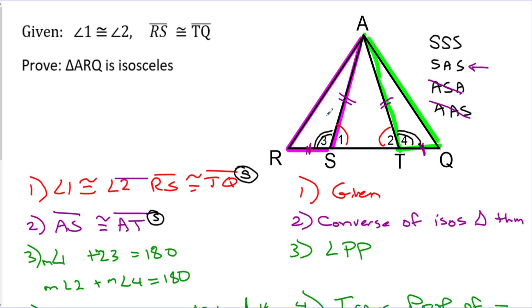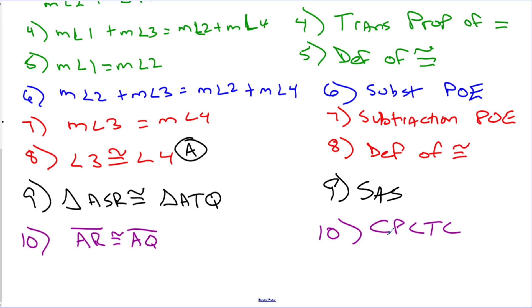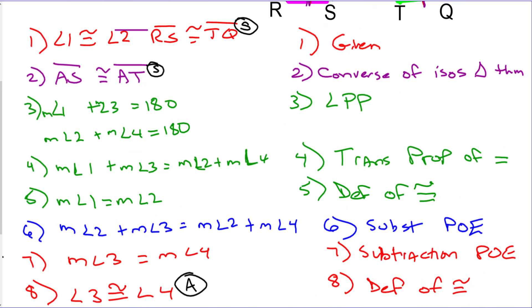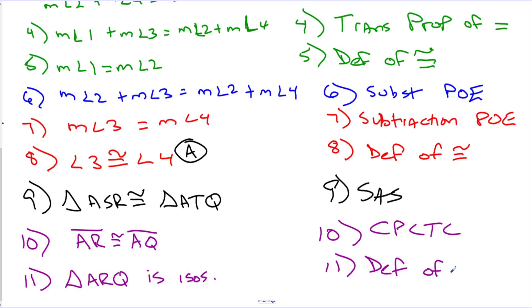Now we know the triangles are congruent, and we did all of that work so I could say AR and AQ are parts of congruent triangles, which means they are also congruent. Step 10: AR is congruent to AQ, by CPCTC - Corresponding Parts of Congruent Triangles Are Congruent. And then because I just showed AR is congruent to AQ, the last step: triangle ARQ is isosceles, by the definition of isosceles - which says if at least two sides are congruent, it's an isosceles triangle. On step 10 we just showed two sides are congruent.